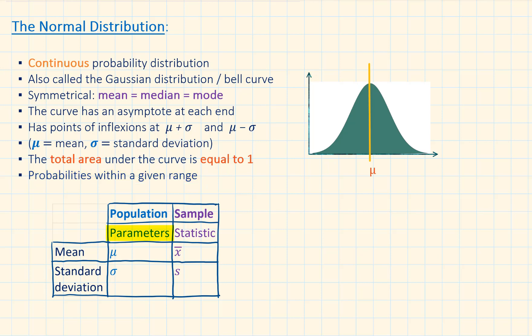In general, we refer to data we get from a population as parameters. These are mu, representing the mean, and sigma, representing the standard deviation. Whereas the data we get from a sample is called a statistic, and the symbols used for the mean and standard deviation are x bar and lowercase s.